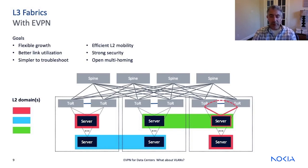EVPN can also provide an improved and open multi-homing solution for end-host resiliency. This could also be applied at the data center edge — not only from the server to the ToR, but also at the data center edge. We now have operational simplicity by using a single control plane protocol for our MAC and IP advertisements, as well as for multi-homing. Multi-homing is a key part of EVPN and something we'll cover in a future video.